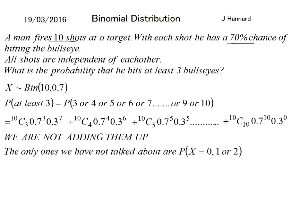The only ones we have not talked about there in that big chain is 0, 1, and 2. So it's a lot less work if we just do 0, 1, and 2 and take away from 1.